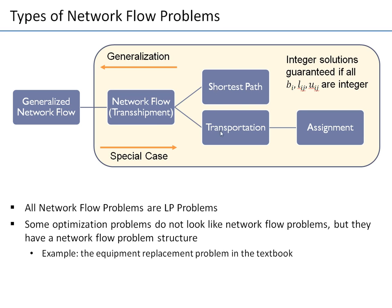We had another special case of the transshipment, which was transportation. The restriction here was different. In shortest path we had one unit of supply and one unit of demand, but in transportation we don't restrict that — we still have multiple units. In the Tropic Sun example, multiple units of supply and multiple units of demand. However, we restrict the structure of the network. We want a set of nodes on the left that are sources and a set of nodes on the right that are sinks with demands.